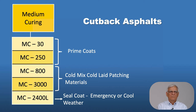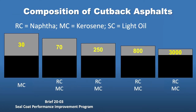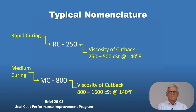As you increase the numbers from 30 to 250 to 800 to 3000, these binders are stiffer in terms of their viscosity at 140 degrees Fahrenheit. The diagram shows we add more cutter material — gasoline or naphtha for RC materials — in a 30 grade material compared to a 3000 grade material. The gray portion indicates the amount of cutter or naphtha/kerosene material. RC stands for rapid curing; 250 refers to the viscosity of the cutback at 140 degrees Fahrenheit, ranging from 250 to 500. For MC-800, it ranges from 800 to 1,600 viscosity at 140 degrees Fahrenheit.